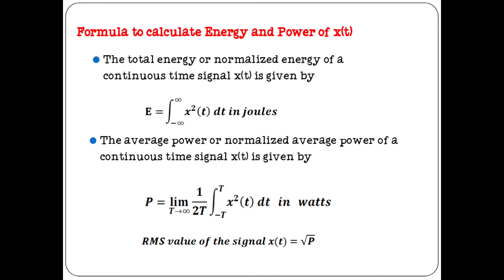Formula to calculate energy and power of x(t): energy can be calculated as E = integral from minus infinity to infinity of |x(t)|² dt in joules. The average power is calculated by P = limit as T tends to infinity of (1/2T) integral from minus T to T of x²(t) dt in watts.